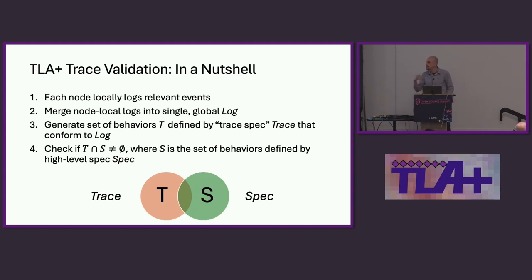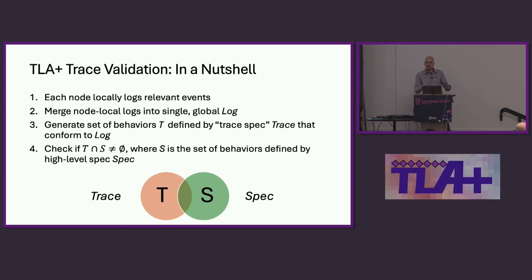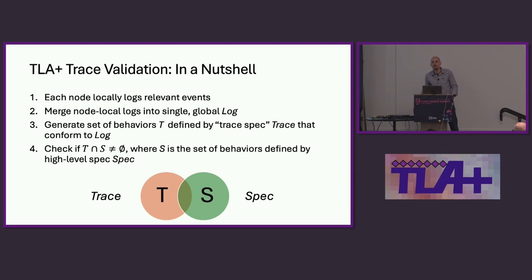In TLA+, the answer to everything is write another specification. We have a trace specification called Trace that reads the log file and creates the set of behaviors T that conform to what you see in the log file. You might think there's just a single behavior in T, but if you had holes in your log file and had to guess, you end up with more than one behavior. The validation part is: you compare your handwritten specification's set of behaviors to those of Trace, and if the intersection is non-empty, this execution was accepted by the high-level specification.